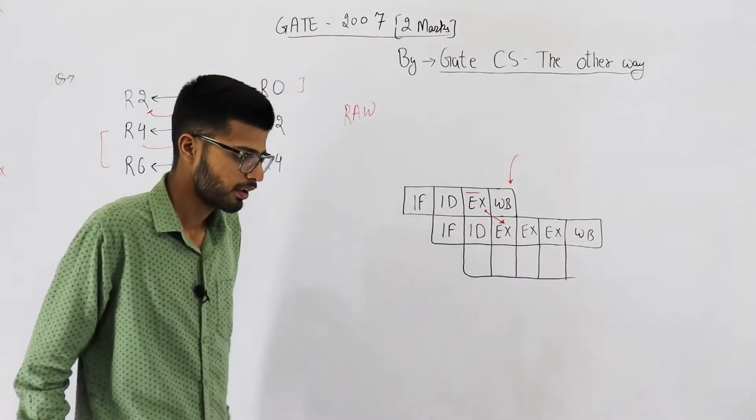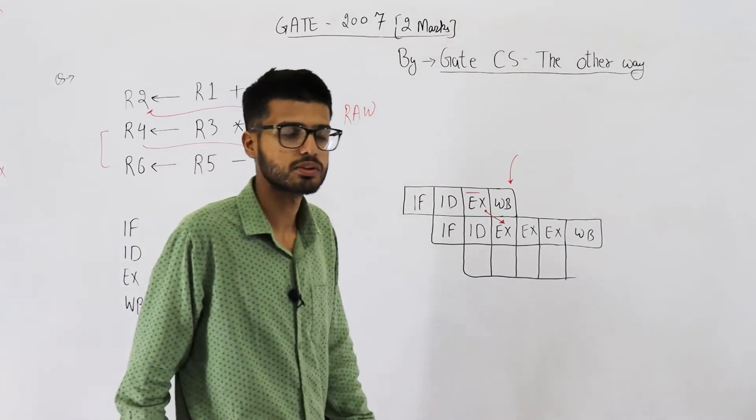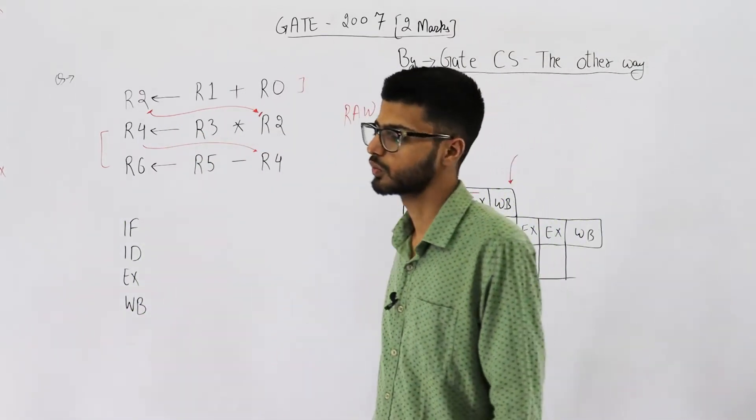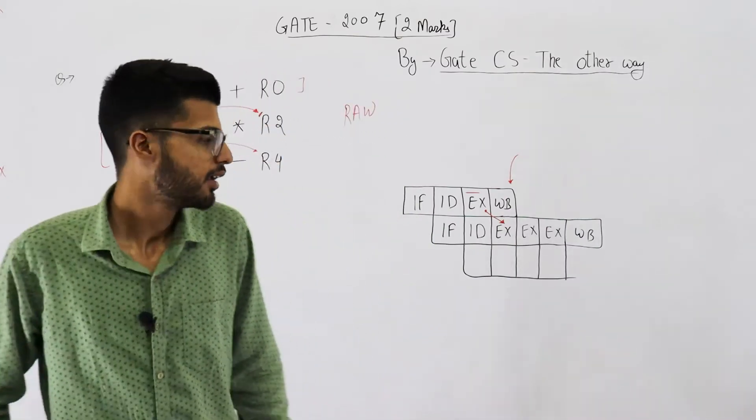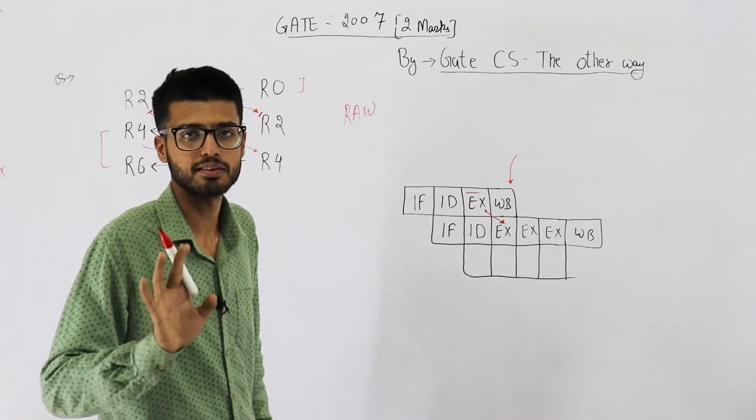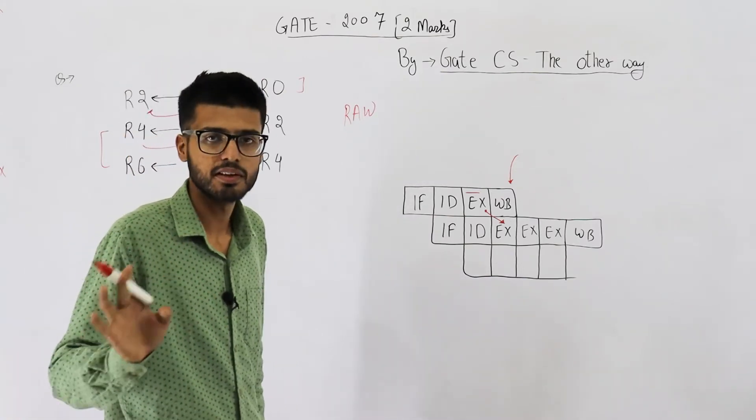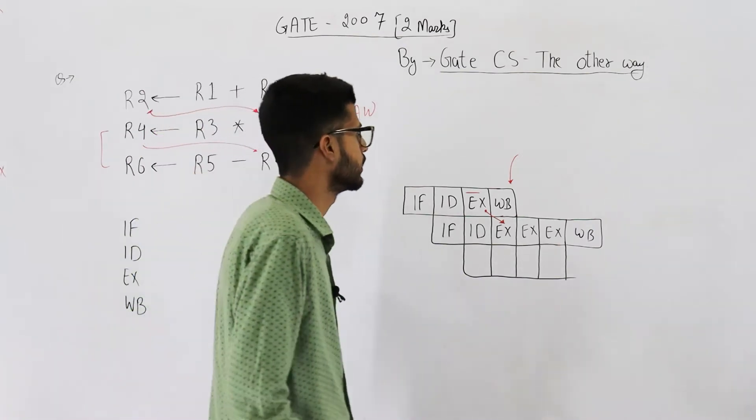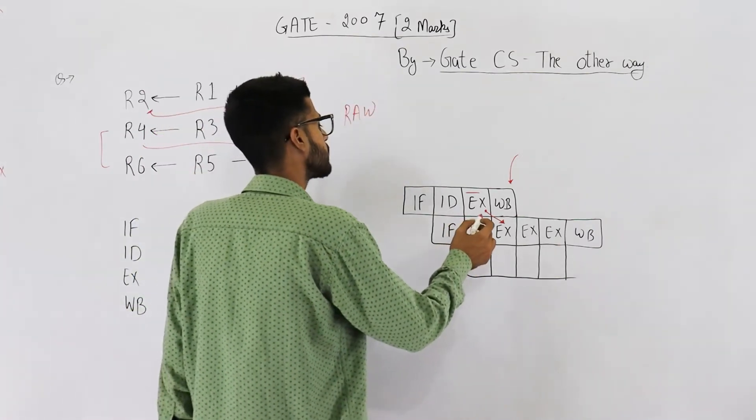That means we are having this value R2, so this value is directly forwarded to instruction I2's execute stage. Now some of you might get confused like how do we know from which stage to which stage the operand is forwarded. Just consider the best possible scenario if nothing is mentioned.